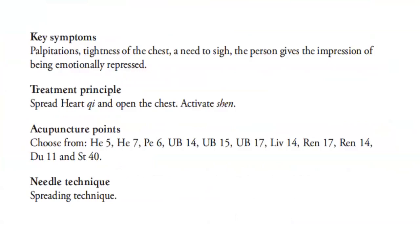The key symptoms are palpitations, tightness of the chest, and need to sigh. The person gives the impression of being emotionally repressed. For the treatment principle, we spread heart qi and open the chest, and we activate the shen. For the acupuncture points, we can choose from Heart 5, Heart 7, Pericardium 6, Bladder 14, Bladder 15, Bladder 17, Liver 14, Ren 17, Ren 14, Du 11, and Stomach 40. We use the spreading needle technique.